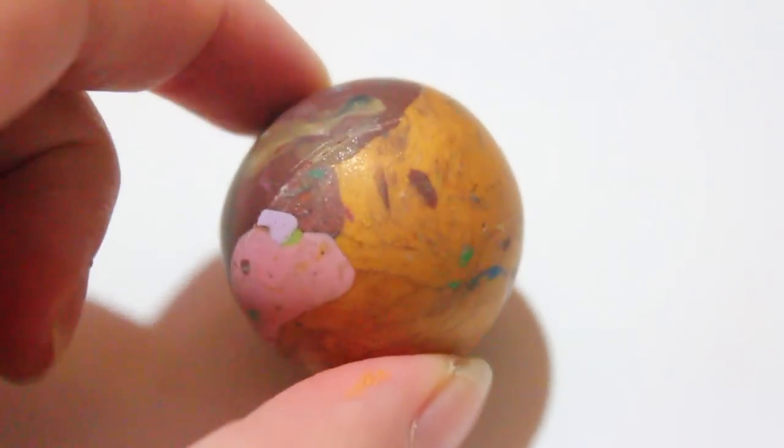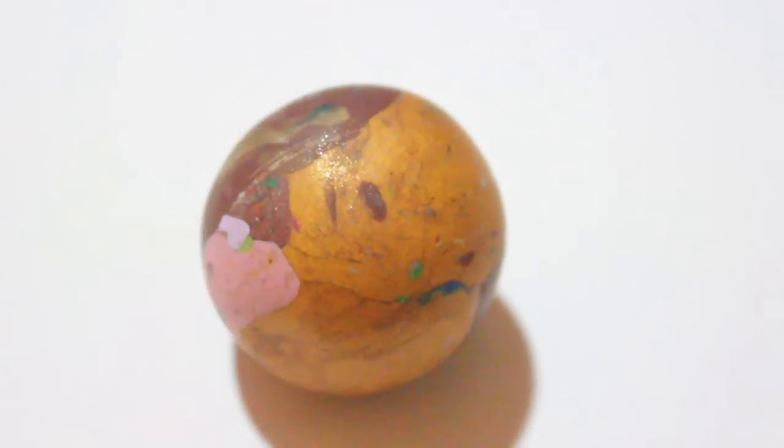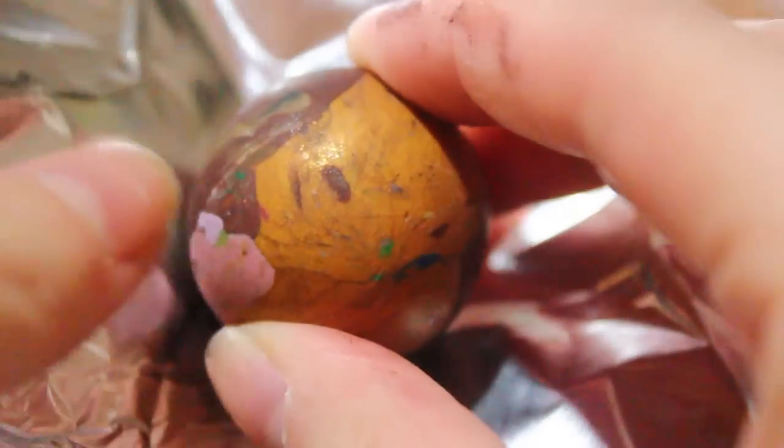First you're going to need a spherical object. I'm using scrap clay that I formed into a ball and hardened. I baked it and I'm wrapping it up in aluminum foil so that whatever piece we put over it will not stick to my scrap piece of clay. Here is my sphere all covered up.